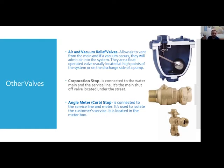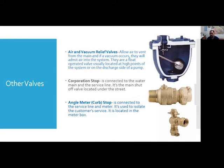Air and vacuum relief valves: air reliefs allow air to vent from the main, and vacuum relief valves — if a vacuum occurs — admit air into the system. They are usually float-operated, located at high points of the system and on the discharge side of pumps, and come in a range of sizes. The corporation stop is connected to the water main and service line — it is the main shutoff valve located under the street, used for isolation when replacing a service. The angle meter curb stop is connected to the service line and the meter, located in the customer's meter box, used to change out meters or curb stops on copper services.